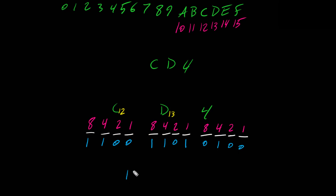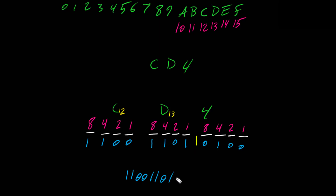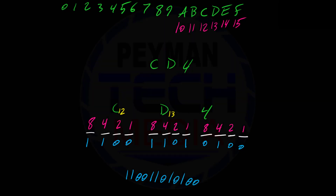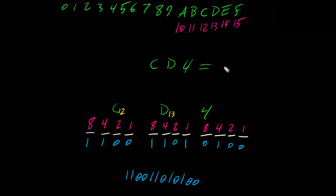Now we put all the binary bits together: 1 1 0 0, 1 1 0 1, 0 1 0 0. Therefore, hexadecimal CD4 is equivalent to binary 1100 1101 0100.